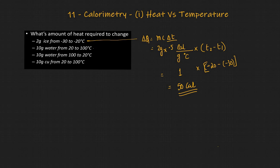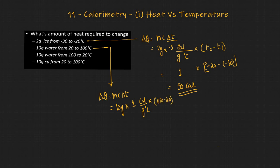Similarly, the second problem: delta Q = MCdeltaT. M = 10 grams of water, C = 1 calorie per gram per degree Celsius, and delta T = 100 minus 20 = 80. That gives delta Q = 10 × 1 × 80 = 800 calories.